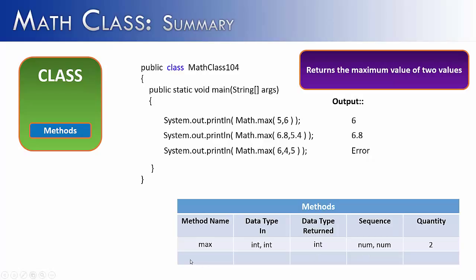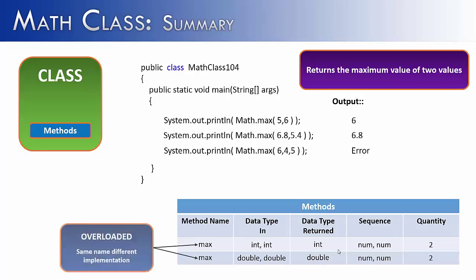There's a second line, just like with absolute value, for the same reason. The method name is max, but this version takes in two doubles and returns a double. This is a different implementation of a method with the exact same name — max and max. The sequence and quantity are the same: a number and a number, quantity of 2. This is overloading — same name, but implemented differently.